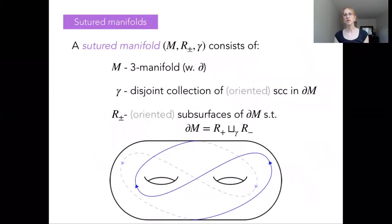So let's give the more complete definition of a sutured manifold. It's a little bit more general than this cut open your closed three manifold along a closed surface. So we're going to consider a sutured manifold as being M is a three manifold with boundary. And we have two other pieces of data that are essentially describing a structure on the boundary of M.